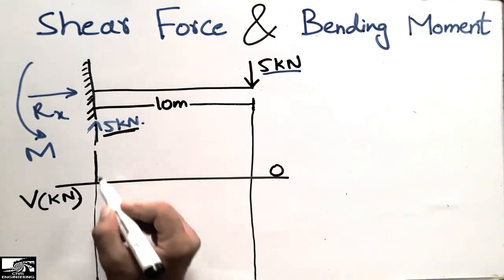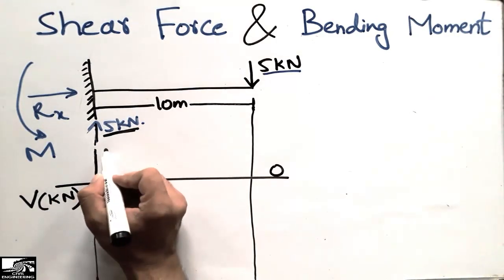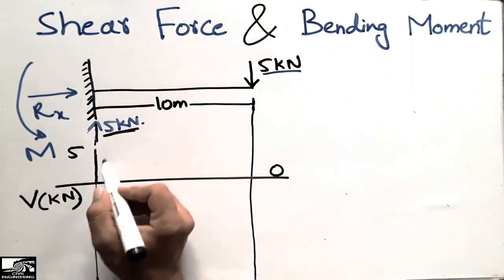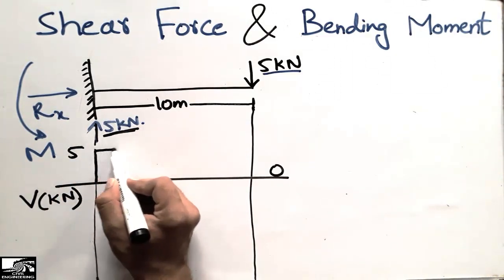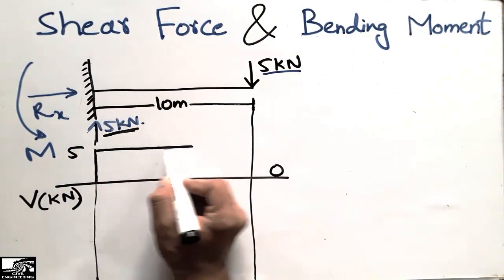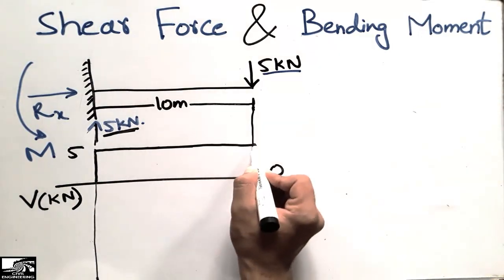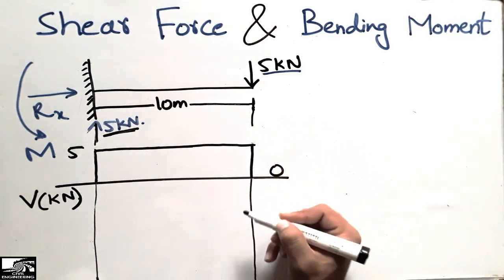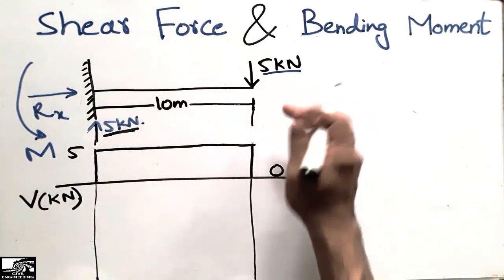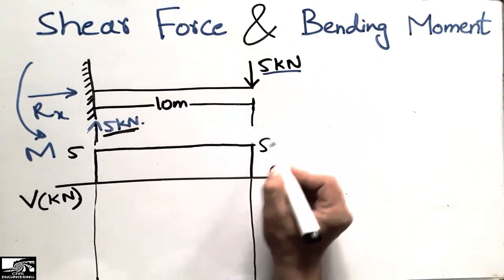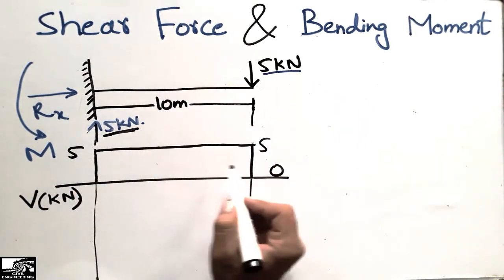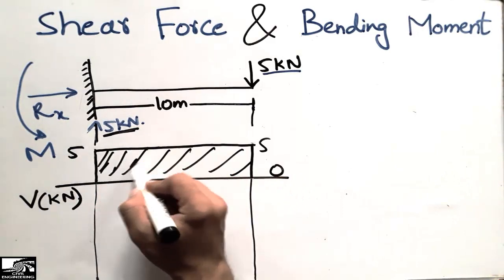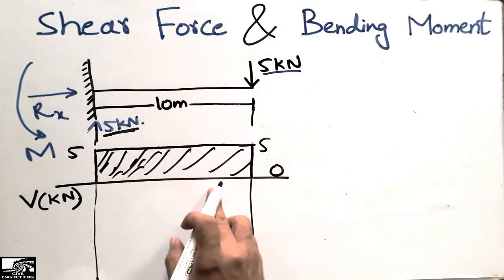The 5 kilonewton shear force is plotted upward. Since there is no load acting along the span of the beam, the shear force moves horizontally and then drops back down to 5 kilonewtons at the right end. This is the shear force diagram of this cantilever beam.